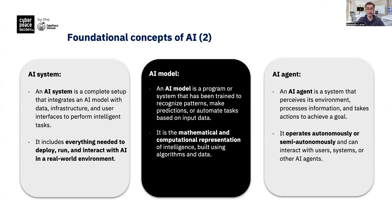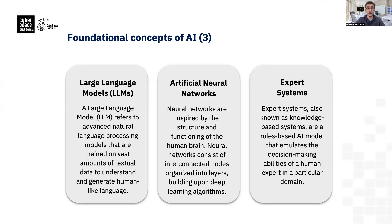The AI system includes everything: the model, data, and the user interface. An AI model is like the brain — it recognizes patterns and starts to interpret them. An AI agent then takes action based on its environment; it can make decisions and interact with users or other systems. Large language models, or LLMs, like Copilot or ChatGPT, are trained on huge amounts of text to generate human-like language.